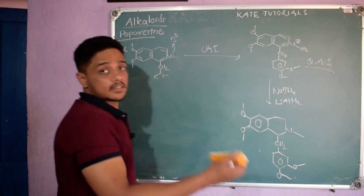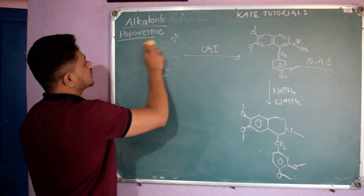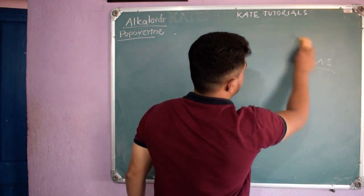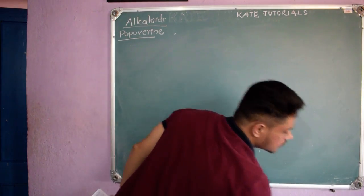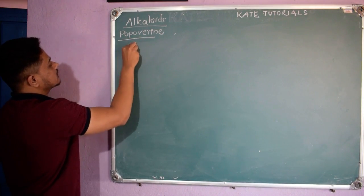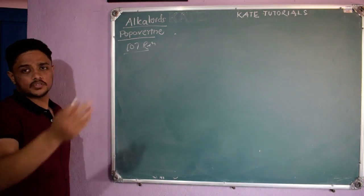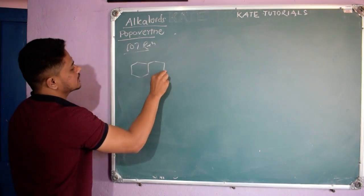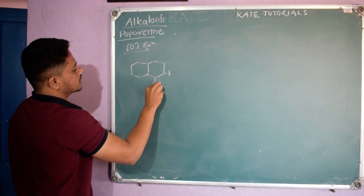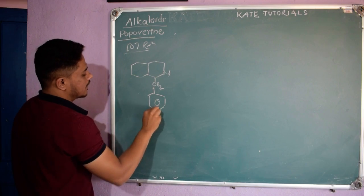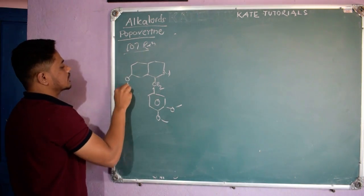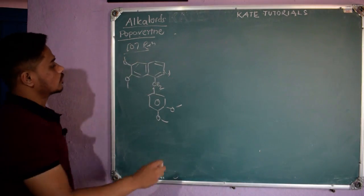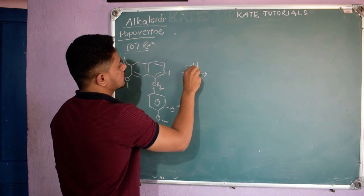These were the reactions discussed in the previous video, but now we see them applied to the actual structure of papaverine. Now let us look at some oxidation reactions. The structure of papaverine has a CH₂ group, a benzene ring, OCH₃, OCH₃, and the isoquinoline ring — just aromatized.